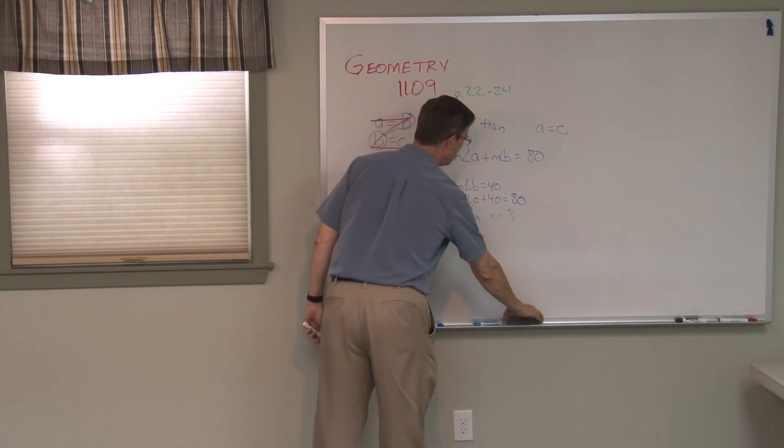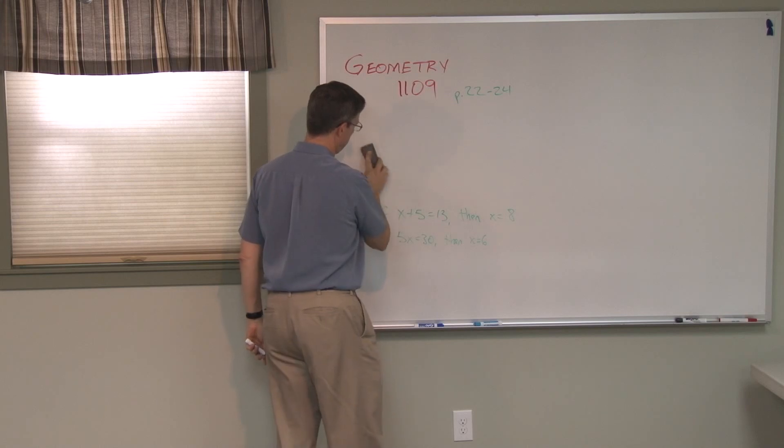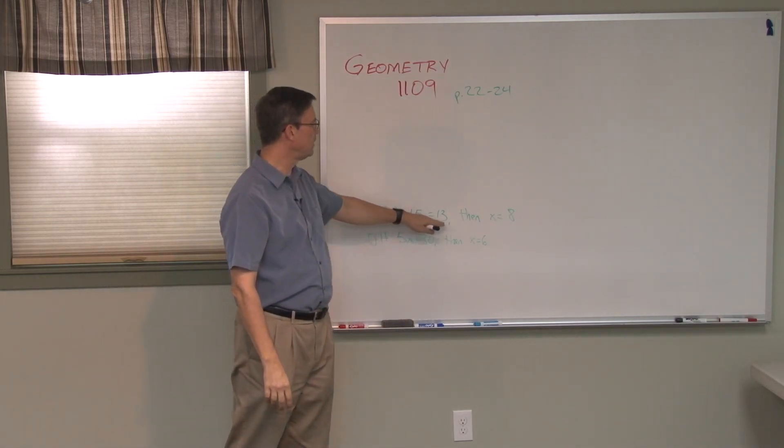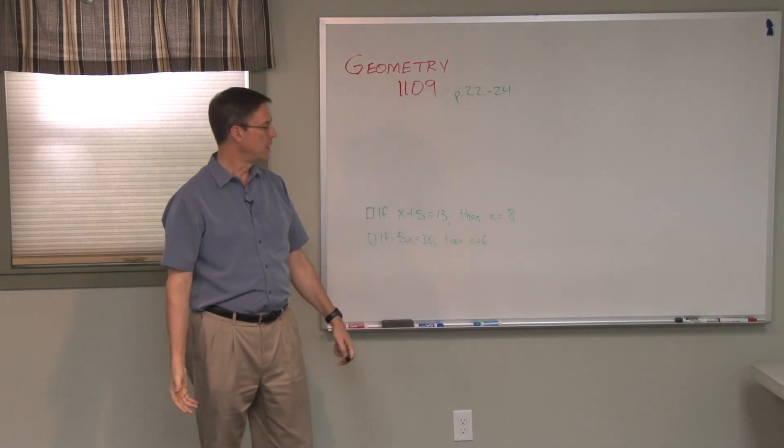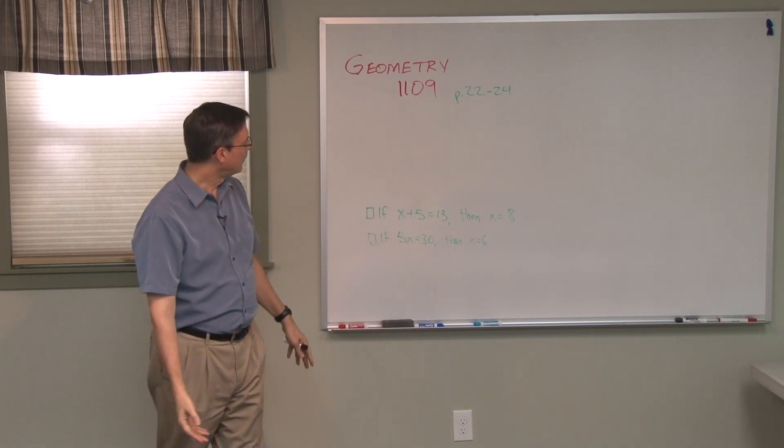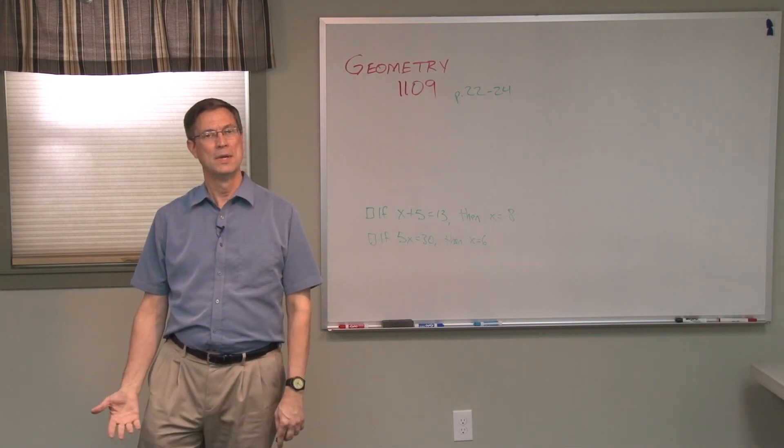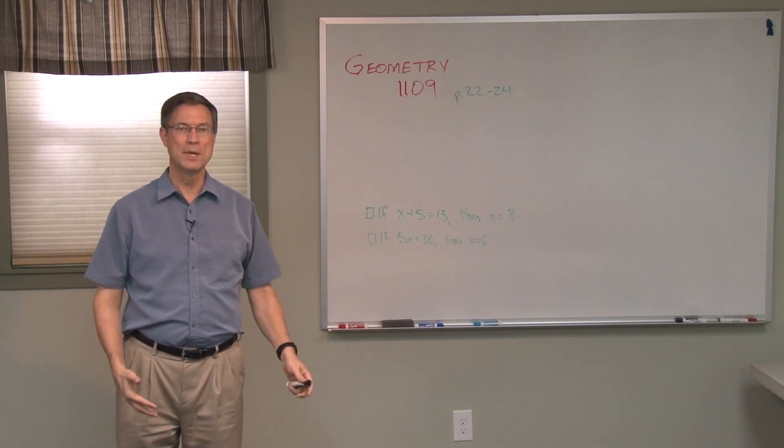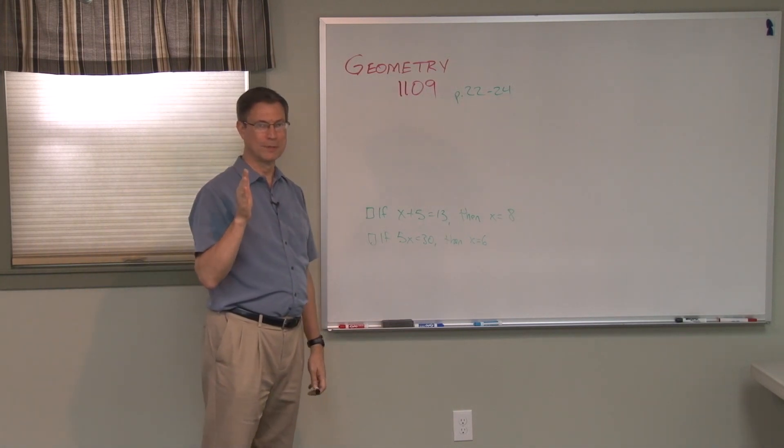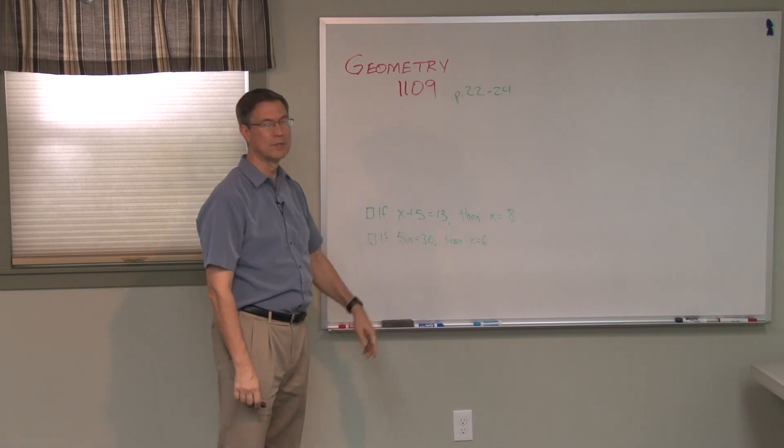Now the last thing I want to talk about here is, let's take two examples that are similar to what you're going to do on page 24. What if we said, if X plus 5 equals 13, then X equals 8? Now, number one, is that true? Yes, you know that. So if I plugged in 8, yep, that would work. So am I doing the addition property, the subtraction property, multiplication, division? What am I doing? What property is being illustrated here? And most students, maybe you're one of them, you look at that and you say, oh, I see addition. So that's the addition property. No.